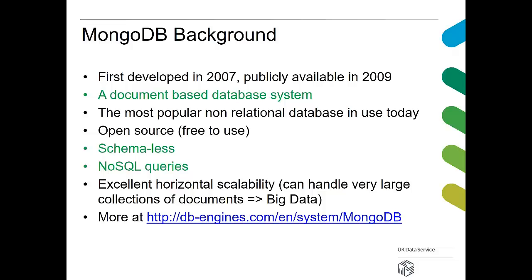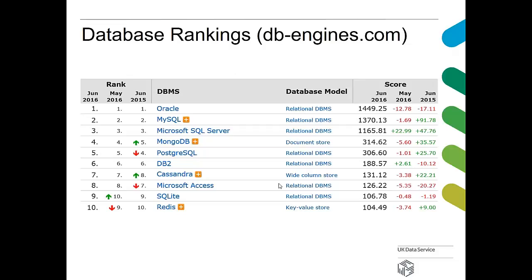More information can be found at a site that runs a monthly update on database popularity. Here is the ranking for June 2016: MongoDB is number four, below only the major relational systems — Oracle, MySQL, and Microsoft SQL Server. Cassandra is another NoSQL database, a wide column store, and Redis at number ten is also a NoSQL database — a key-value store. So within NoSQL databases there are still different types; MongoDB's document-based system is what we're looking at.